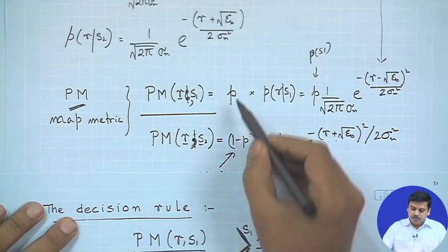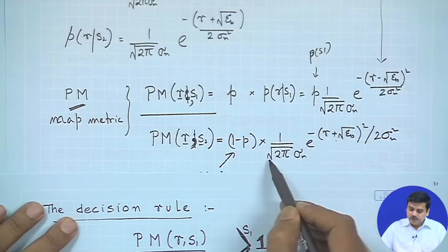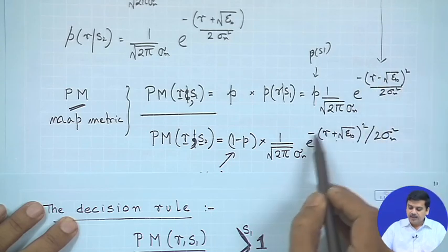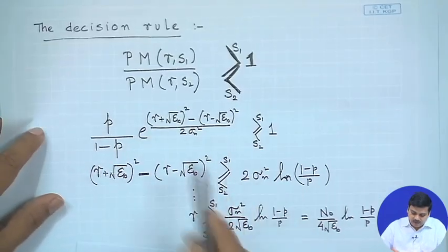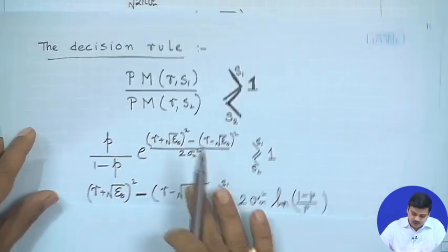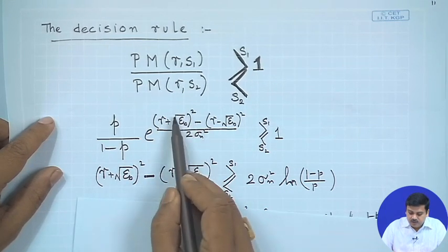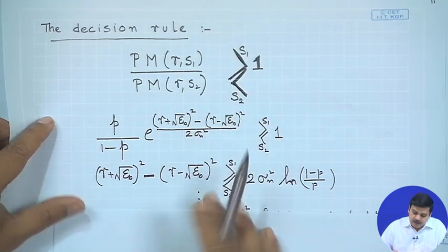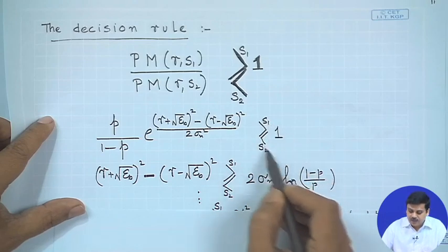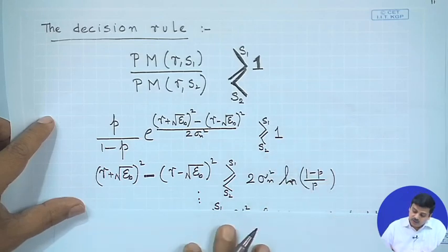Taking the ratio, the term P/(1 − P) appears, the common exponential normalization cancels, and in the exponent the numerator term minus the denominator term remains. If this ratio is greater than 1, we choose S_1; if less than 1, we choose S_2 — that is the output of the decision device.